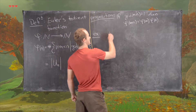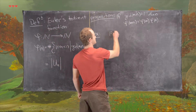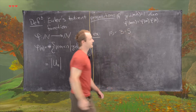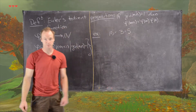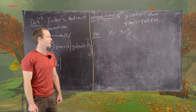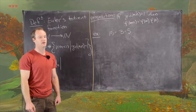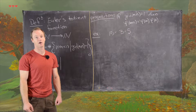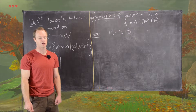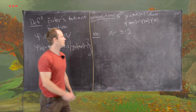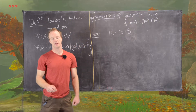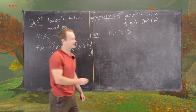Let's look at an example before the proof. We'll consider 15, which is 3 times 5. Much like the proof of Euler's phi function evaluated at a power of a prime, we're going to look at an array — specifically, the numbers 1 through 15 arranged in a grid.